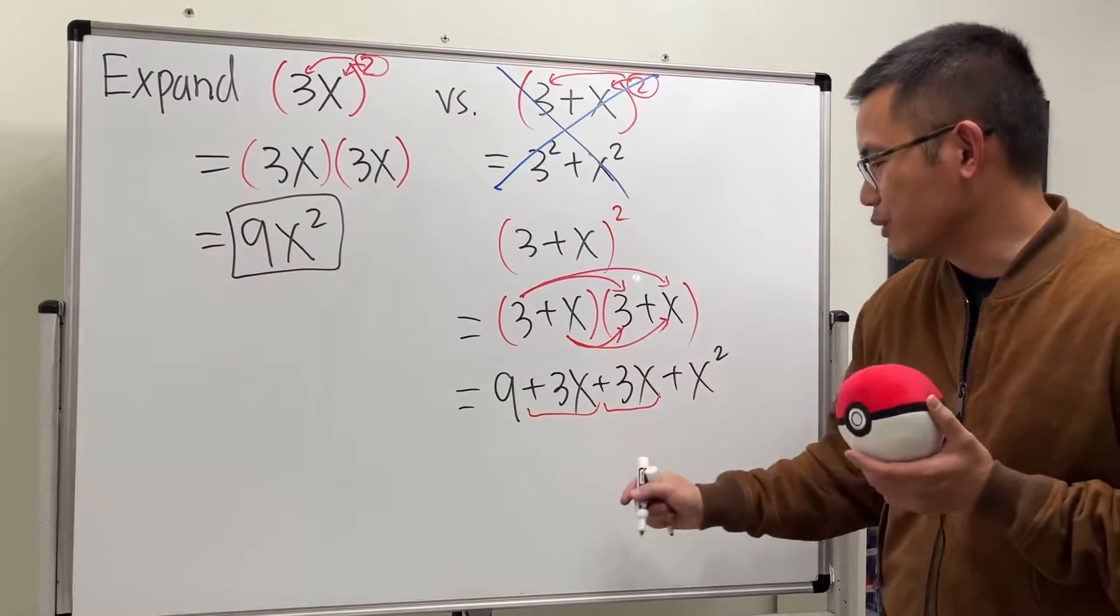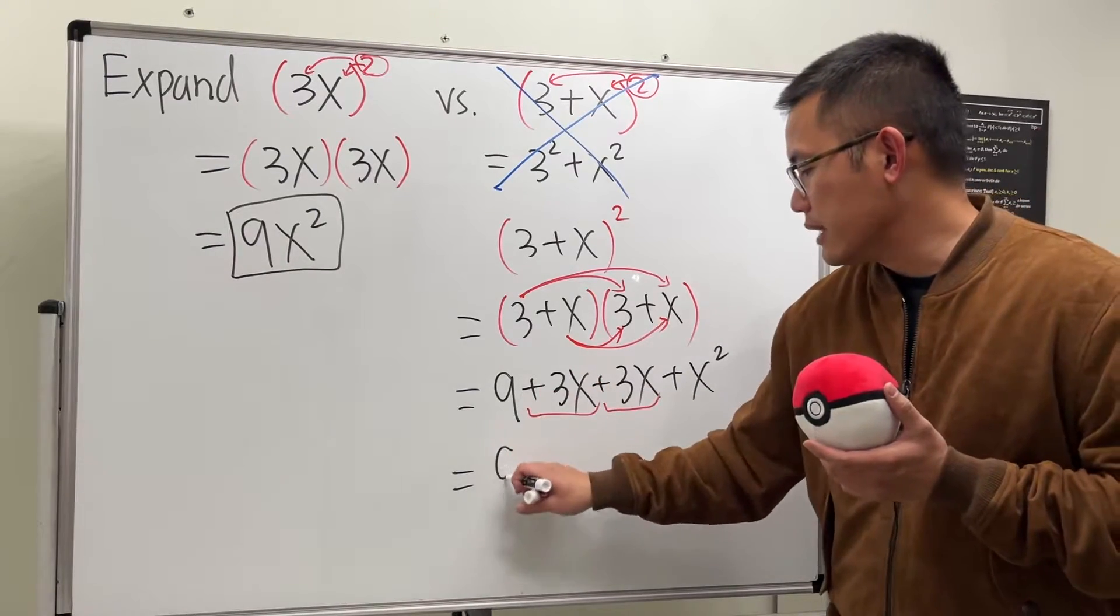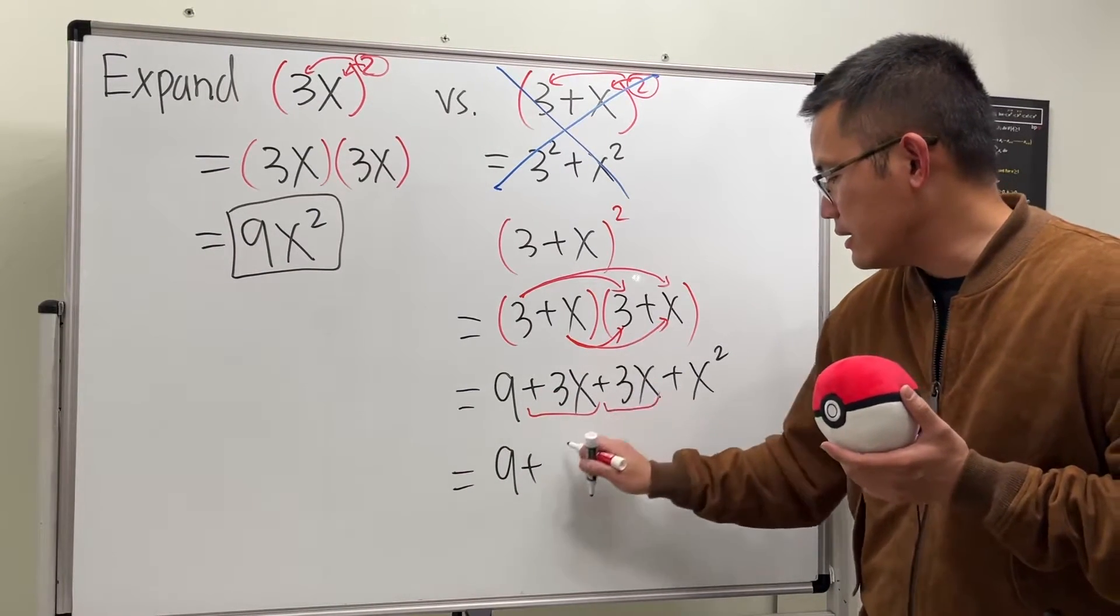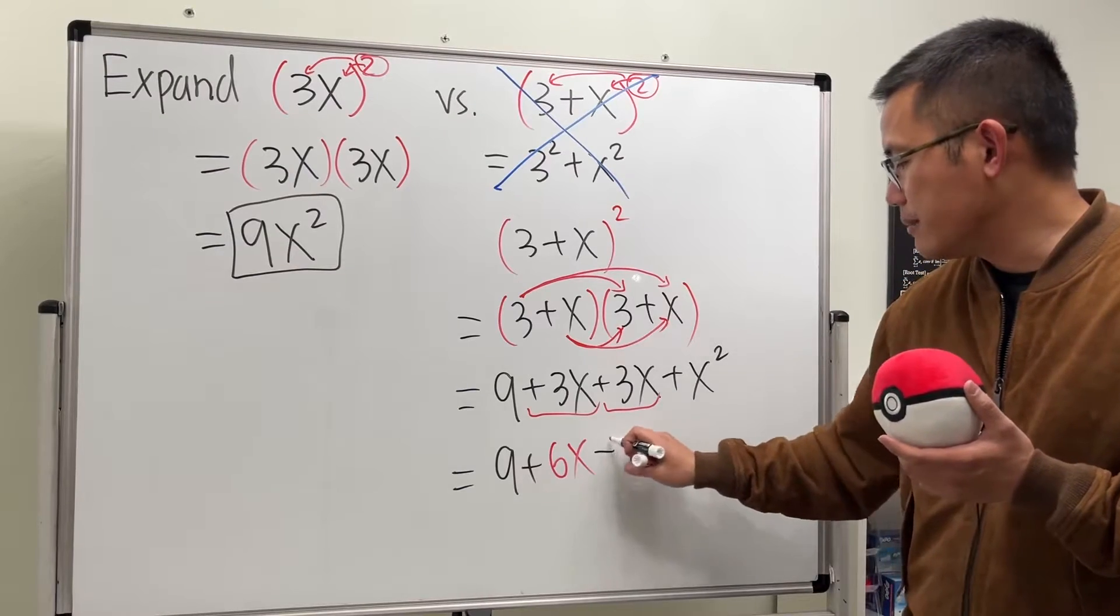And notice in the middle we have the +3x plus another 3x, so we can combine them. And of course we'll just get 6x, so this is 9 + 6x + x².